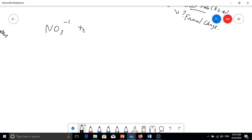Total number of valence electrons is: nitrogen is 5, oxygens is 6 times 3, negative 1 charge is plus 1. I have one additional electron. So this is 24 valence electrons.